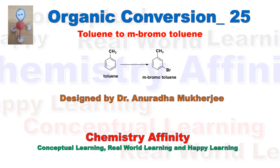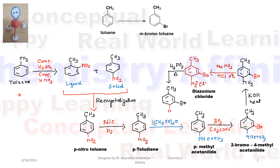Today's organic conversion video will discuss the synthesis of meta-bromotoluene from toluene. The first step is the nitration of toluene. We will be getting ortho-nitrotoluene and para-nitrotoluene, because CH₃ is an electron donating group, so it is an ortho and para director.